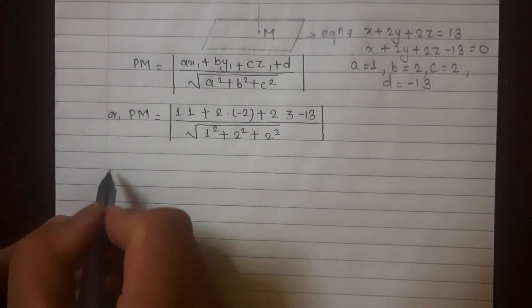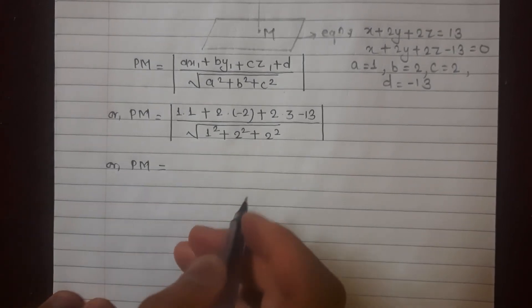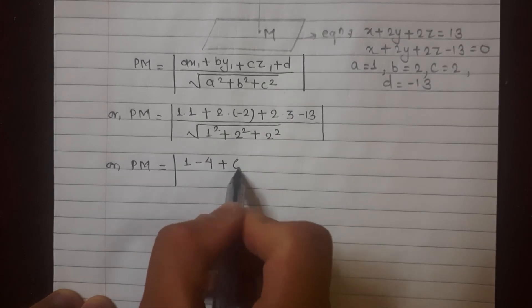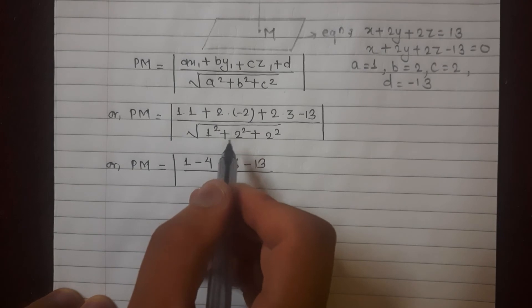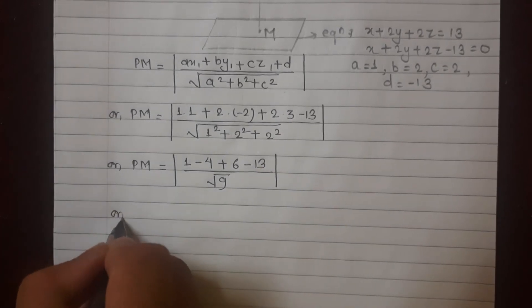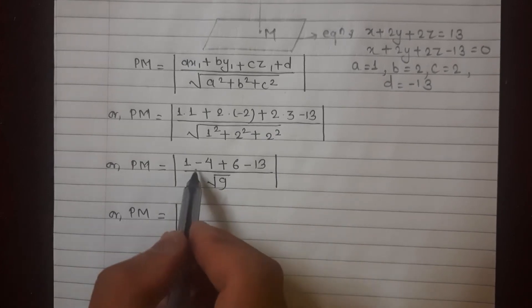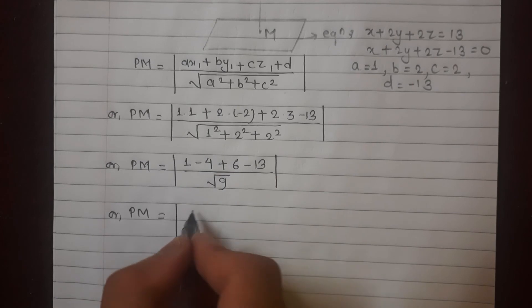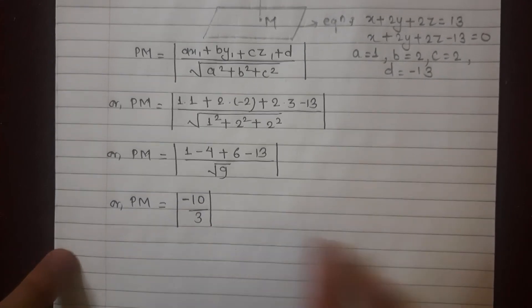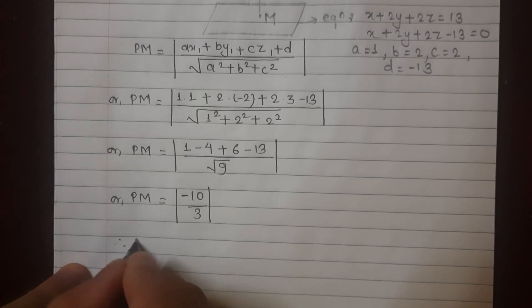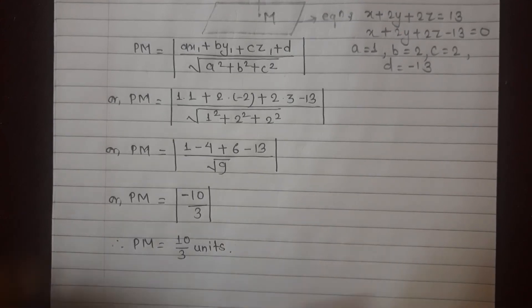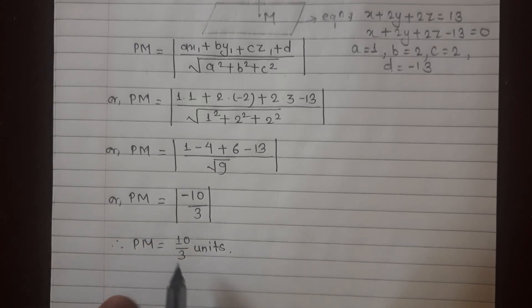PM equals 1 minus 4 plus 6 minus 13, divided by root 9. That gives 1 plus 4 plus 4 equals 9, root 9 equals 3. So 1 minus 4 plus 6 minus 13 equals minus 10, divided by 3. Therefore PM equals 10 by 3 units. That is the distance between the point and the plane — the answer is 10 by 3 units.